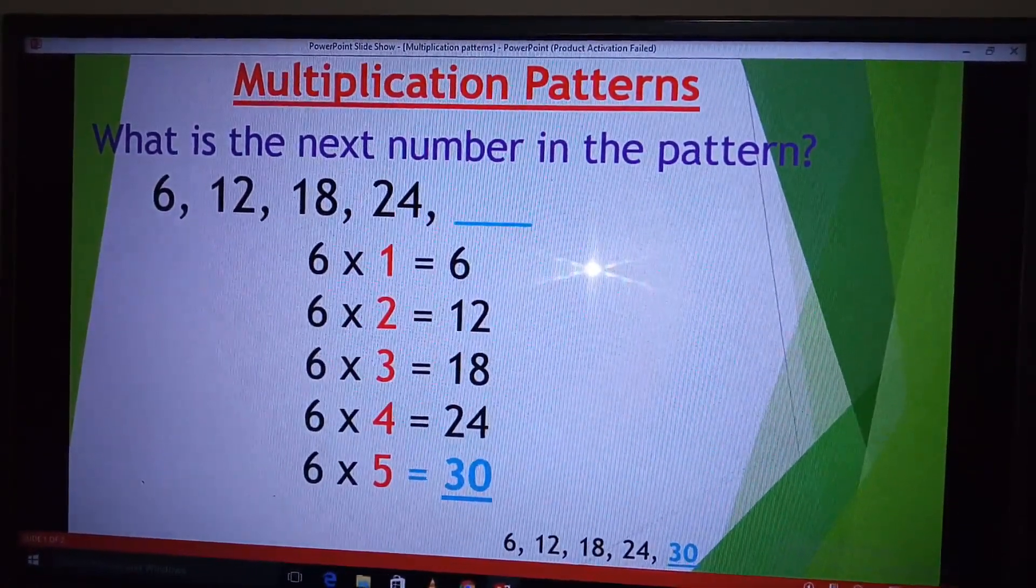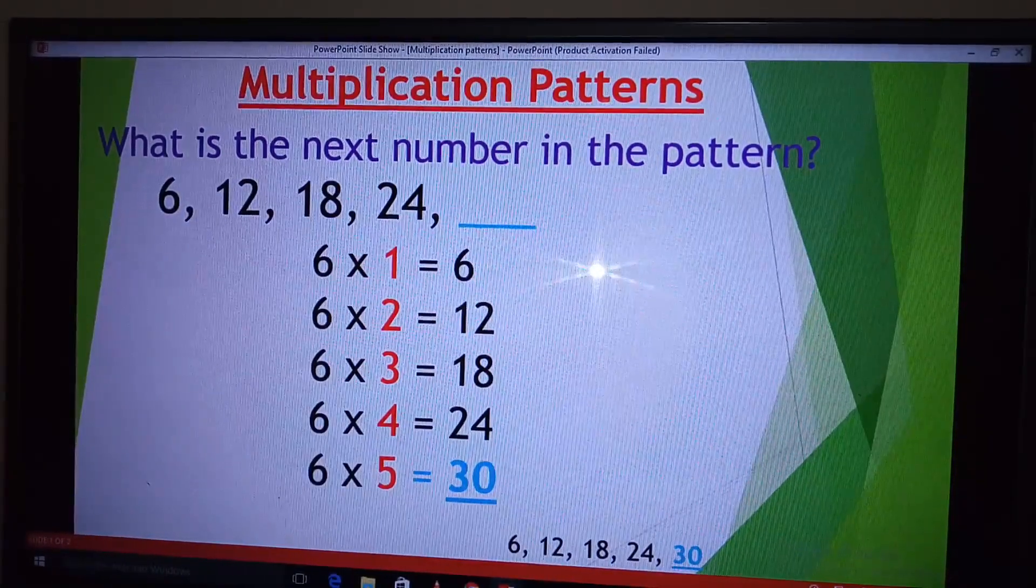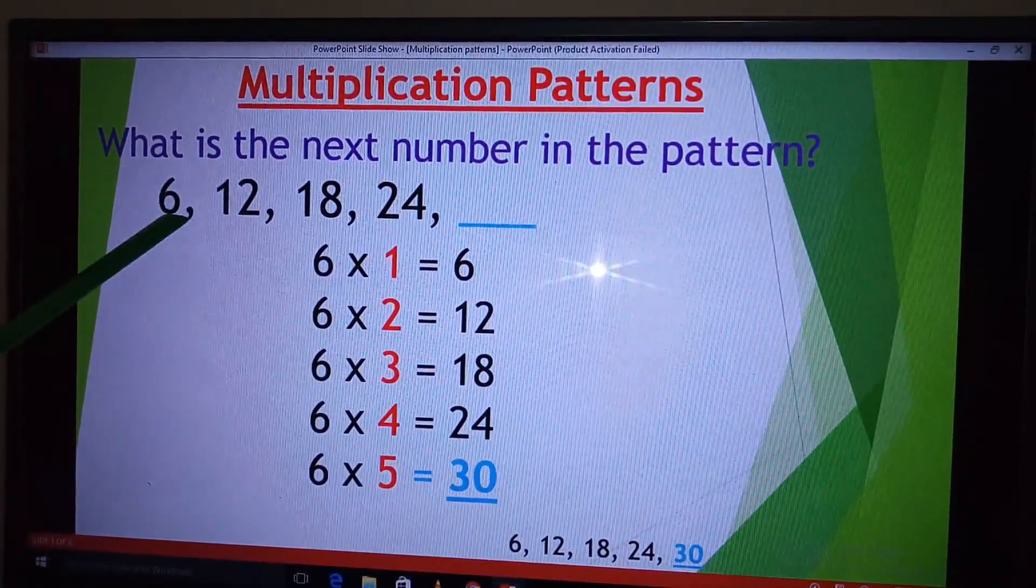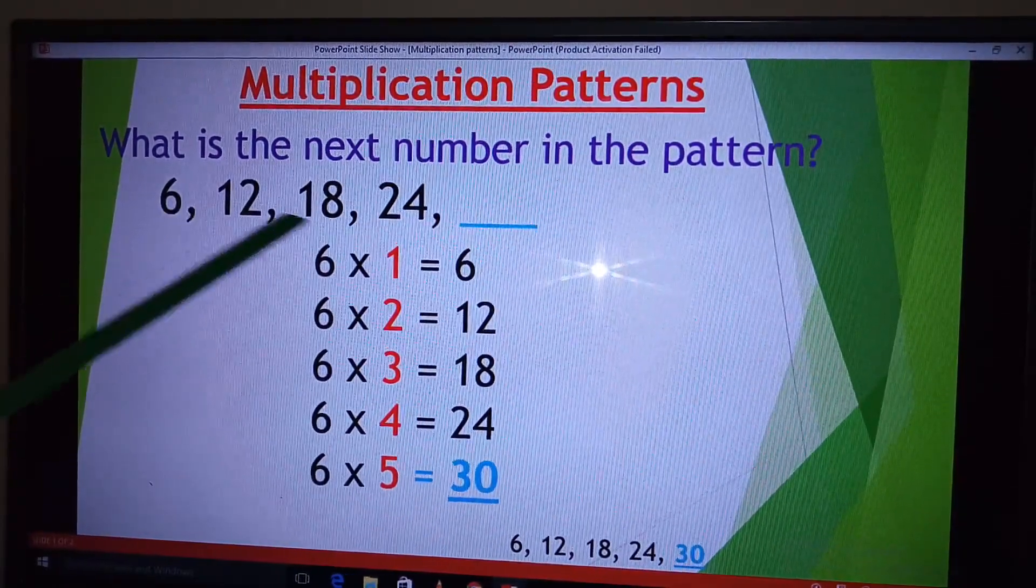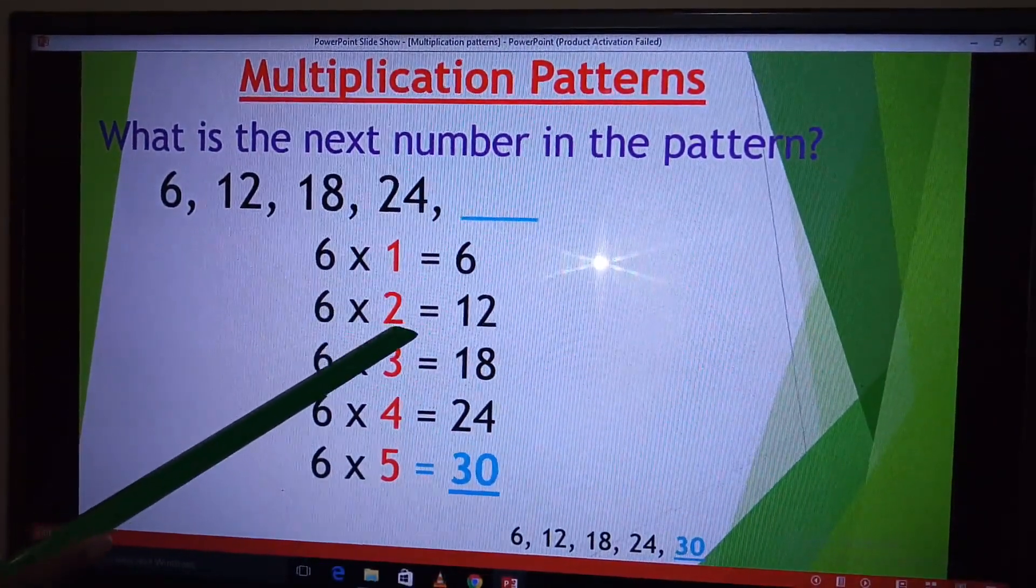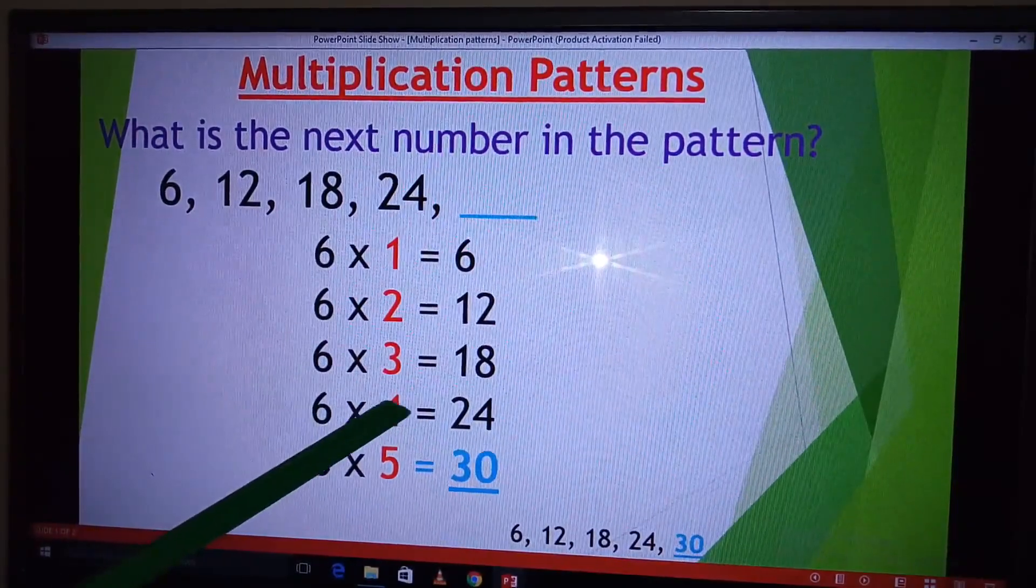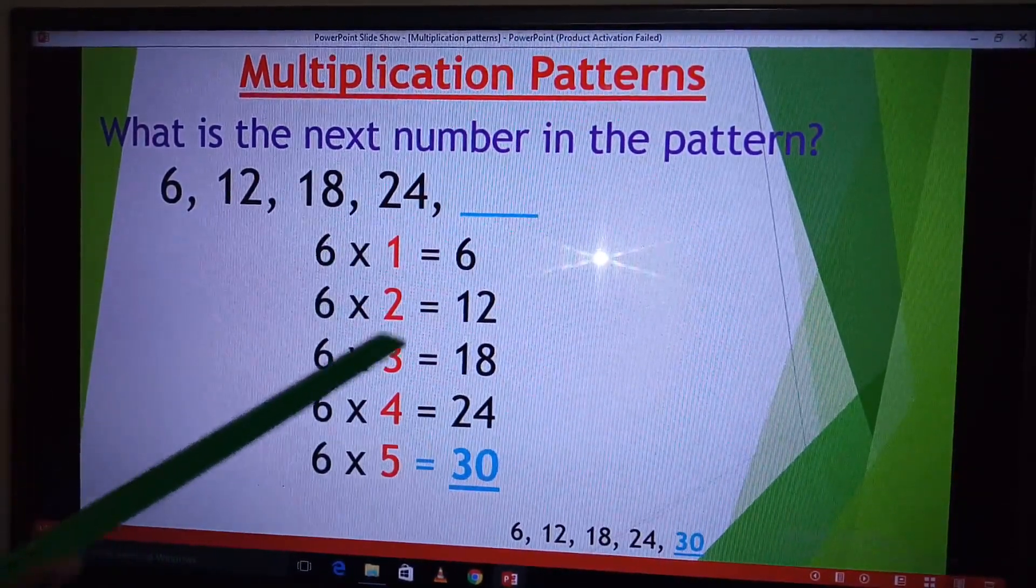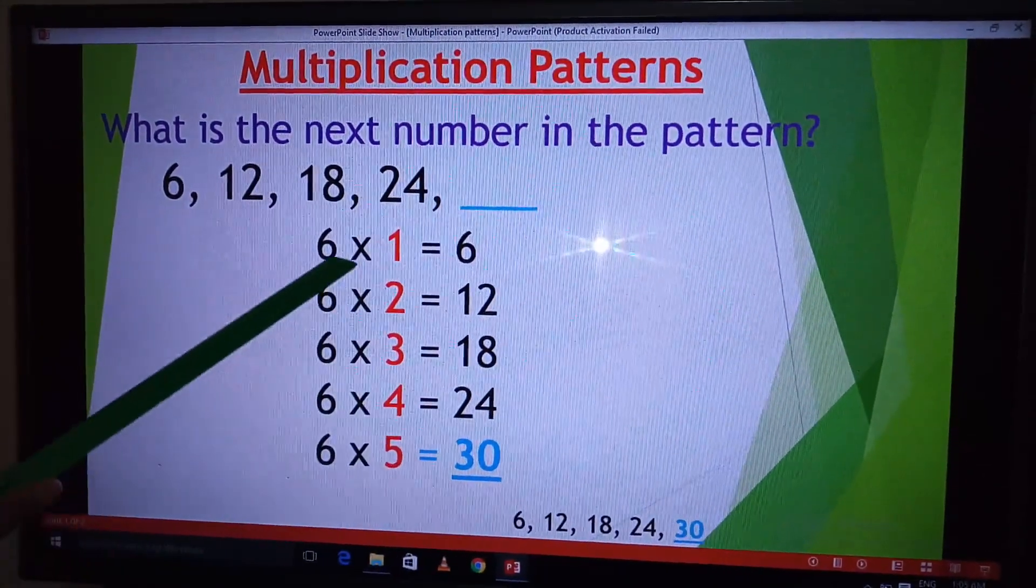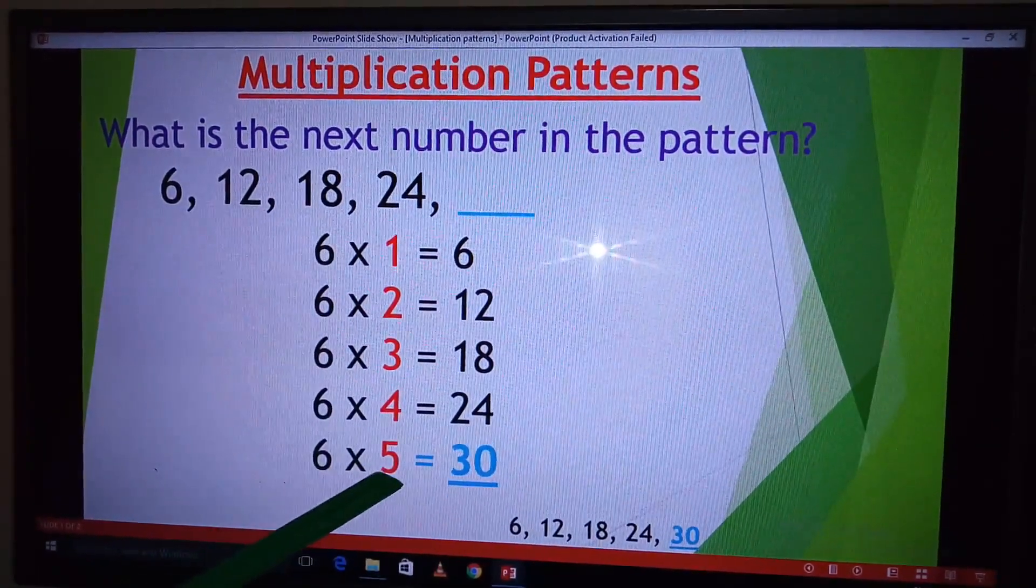So we need to identify the rule. Before we identify the next number, we need to identify the rule that has been followed to write these numbers. So for us to get 6, 6 must have been multiplied by 1 to get the number itself. For us to get 12, we multiplied 6 times 2. For us to get 18, we multiplied 6 times 3. For us to get 24, we multiplied 6 times 4. So it goes without saying that for us to get the next number, we are going to multiply 6 times 5 because it seems that 6 will be multiplied by 1, 2, 3 like that in ascending order. So 6 times 5 is 30.